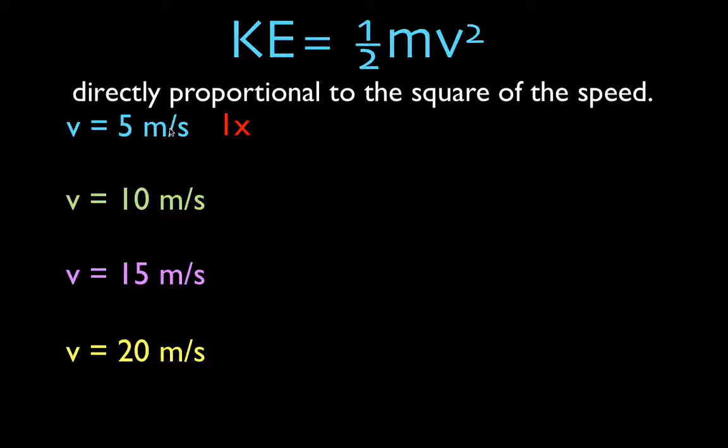And then we're going to calculate the kinetic energy of the same object when we double its velocity to 10. And then we triple its velocity to 15. And then we're going to go all the way and quadruple its velocity to 20 meters per second.